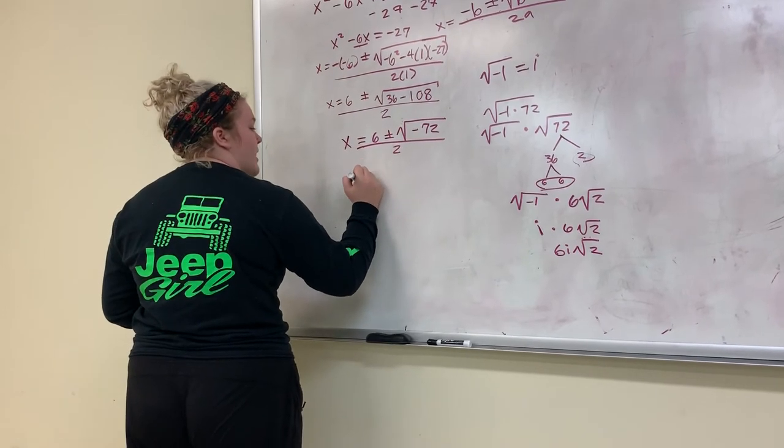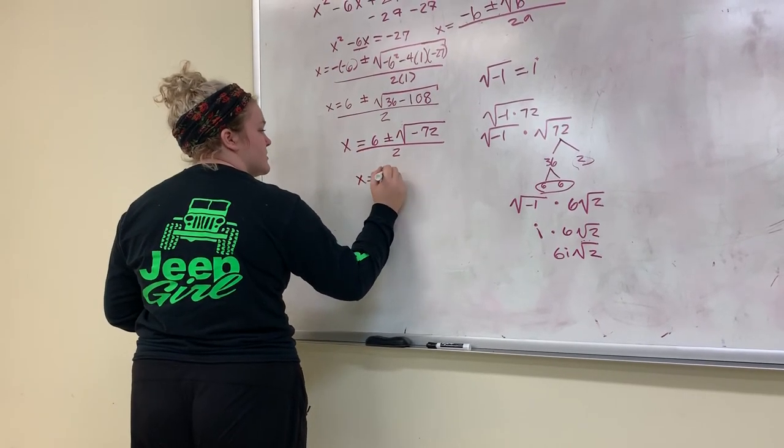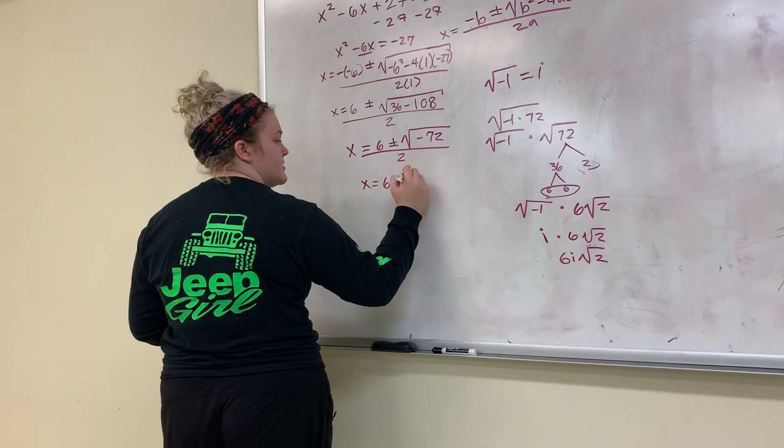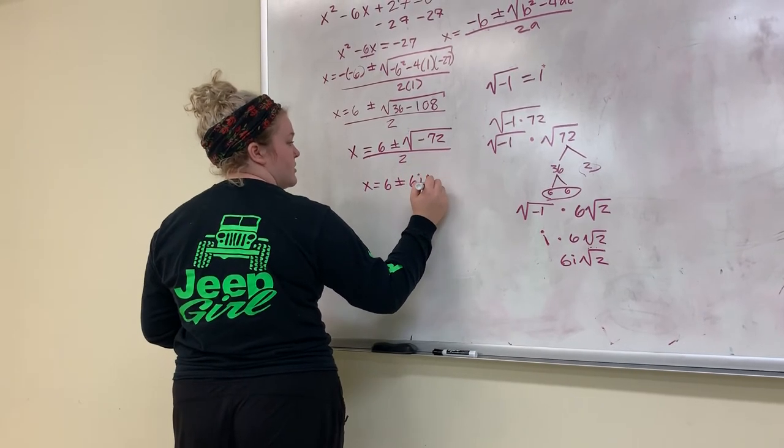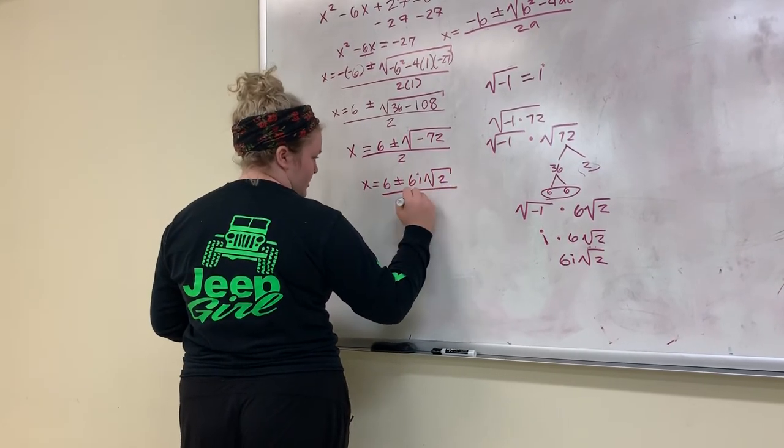And this would be x equals 6 plus or minus 6i square root of 2 all over 2.